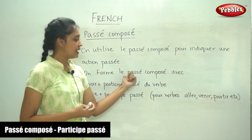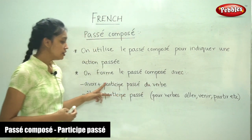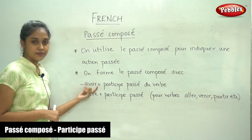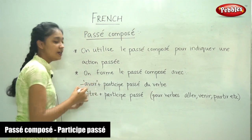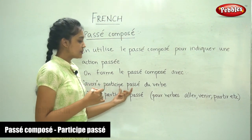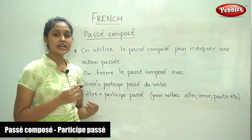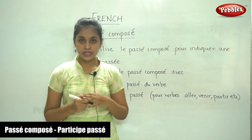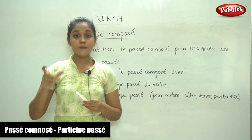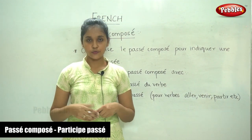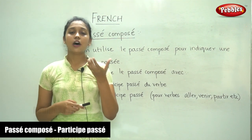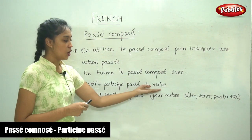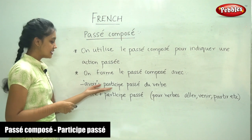We form le passé composé with two rules. We either use avoir — that is, the conjugation of avoir plus the past participle of that particular verb. To form the passé composé, we take the verb, form its past participle, and write the avoir conjugation for that subject. So: avoir plus the past participle of the verb. This applies in most cases.